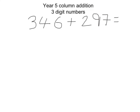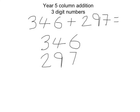We're going to set it out in columns now. We have the biggest number first, 346, and we've got 297. I'm going to put a line underneath there and a plus sign to remind me what calculation we're doing.